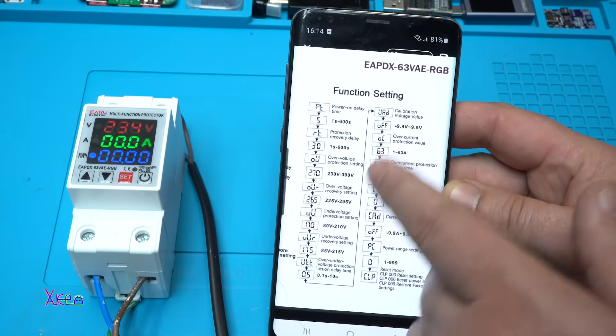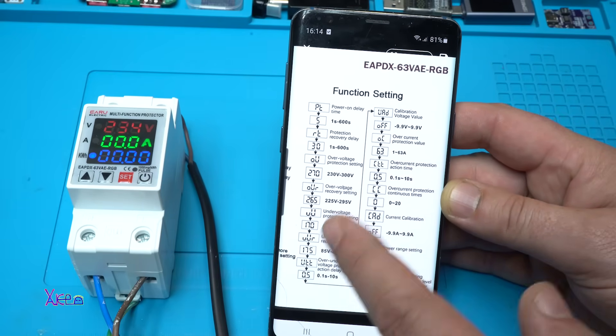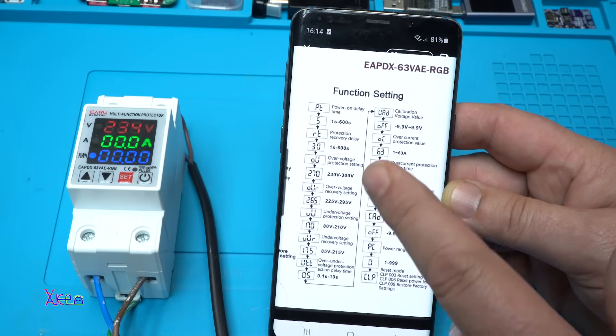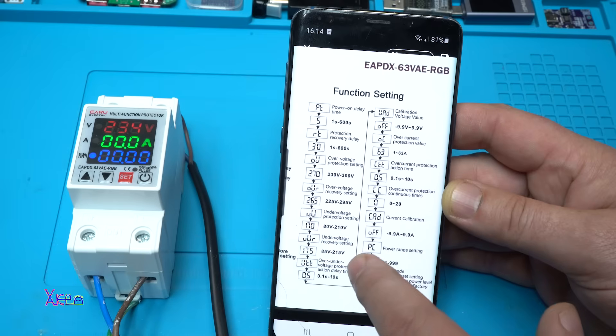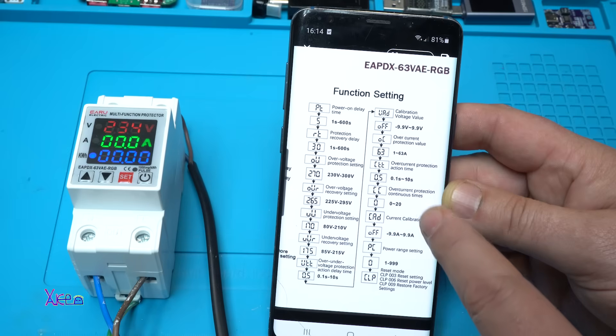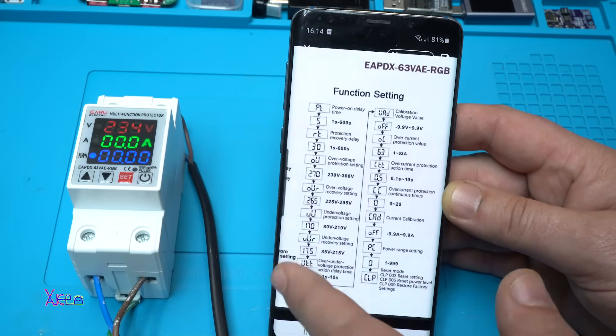You can see all the function settings that can be set on this module. And pause the video. Take a screenshot. And you can read it. But the main functions that I love is over voltage protection, under voltage protection, and over current protection. And also can be set the delay times.